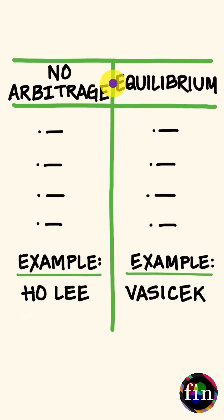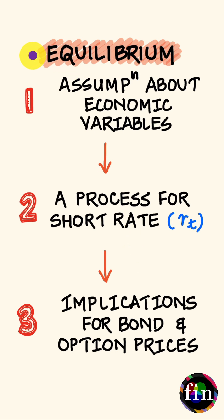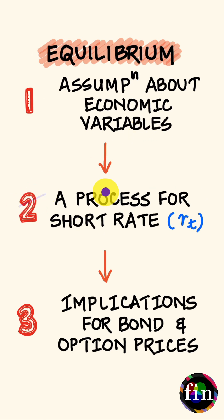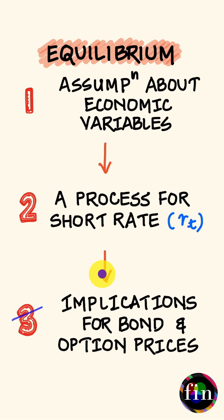Let's understand equilibrium interest rate models the Vasicek way. To create an equilibrium model, step 1 is to make assumptions about economic variables. From these, in step 2, we derive a process for the short-term interest rate, and once we have this process working, in step 3, we draw out implications for bond and option prices.